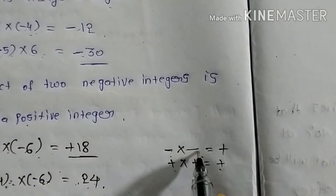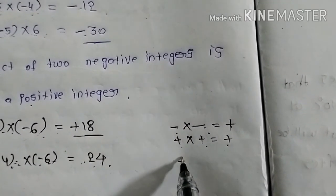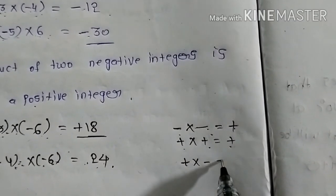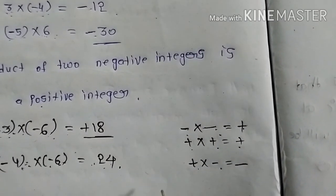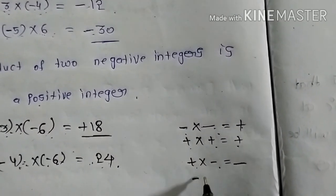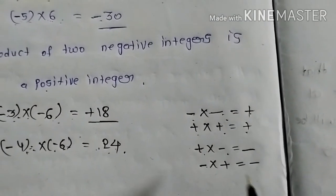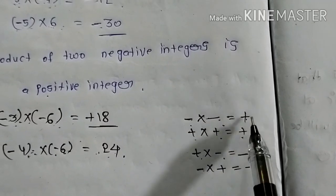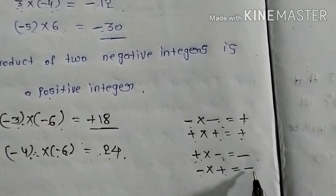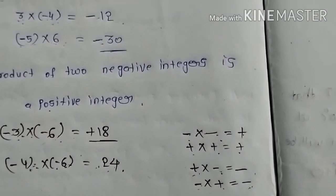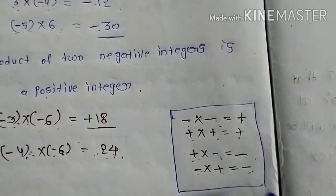The product of two positive integers is always a positive number. The product of two negative integers is always a positive integer. The product of a positive and negative integer is always negative. Minus into minus is plus. Plus into plus is plus. Plus into minus is minus. Minus into plus gives minus only. You can understand this and do problems very easily.